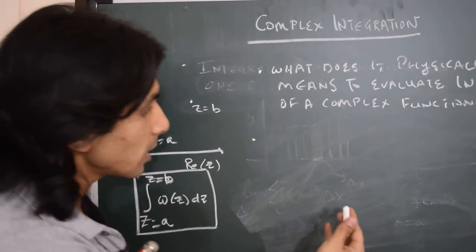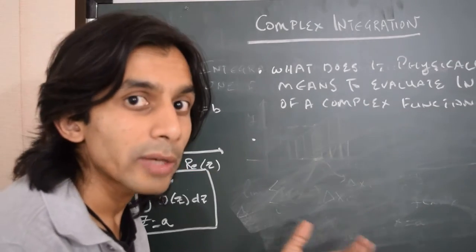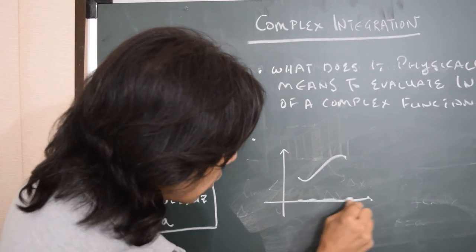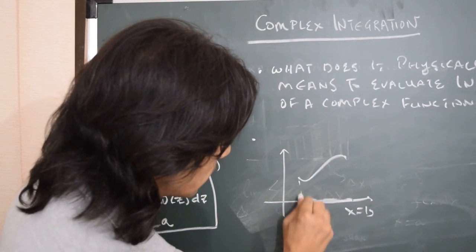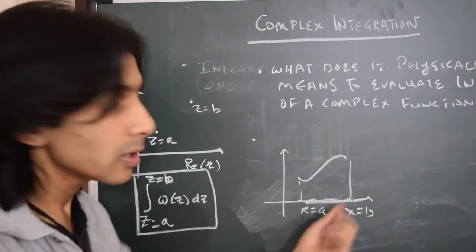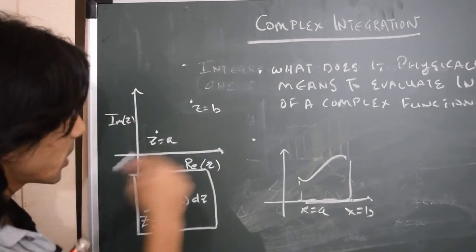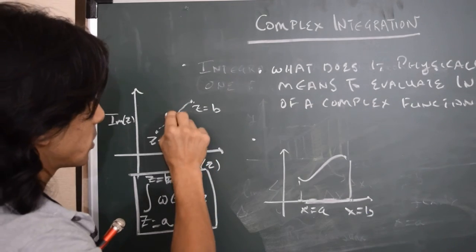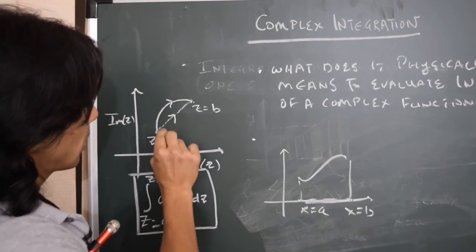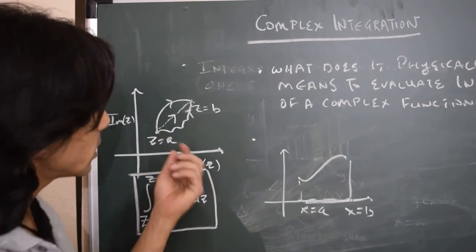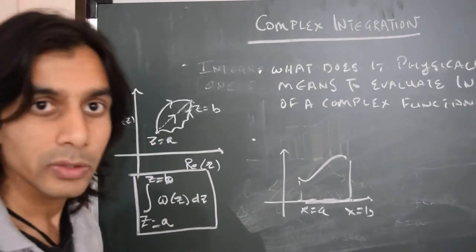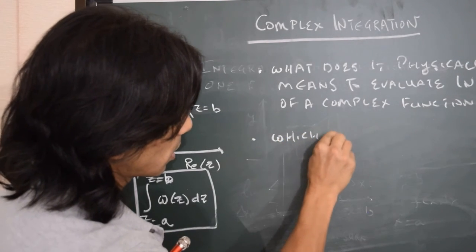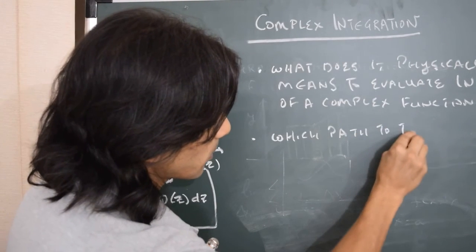The other question that arises is: if we think about the integral of a function of one real variable, in that case we were integrating along the real axis from x equals a to x equals b. So the path of integration is quite clear. But what happens in the complex plane? How do we go from z equals a to z equals b? We can choose to go along this path, or we can take another path, or yet another path. As you can see, we have infinitely many choices for the path we want to take from z equals a to z equals b. So the next question is: which path to take?